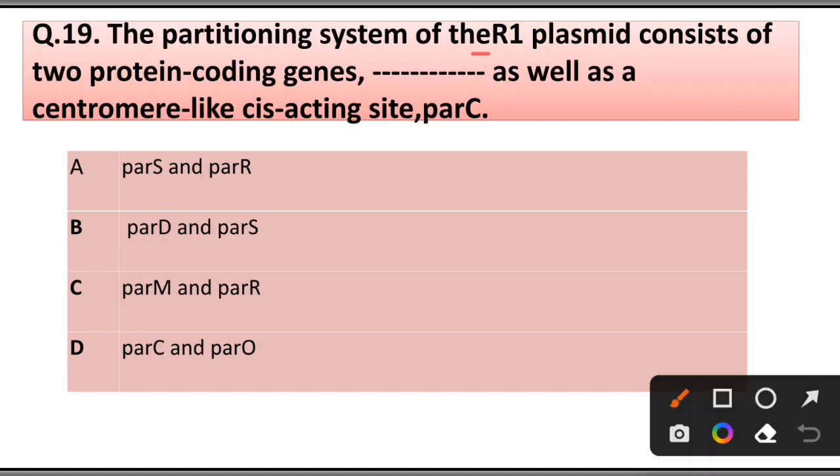Question number 19: The partitioning system of the R1 plasmid consists of two protein-coding genes as well as a centromere-like cis-acting site, parC: A) parS and parR, B) parD and parS, C) parM and parR, D) parC and parO. Answer is option C, parM and parR.